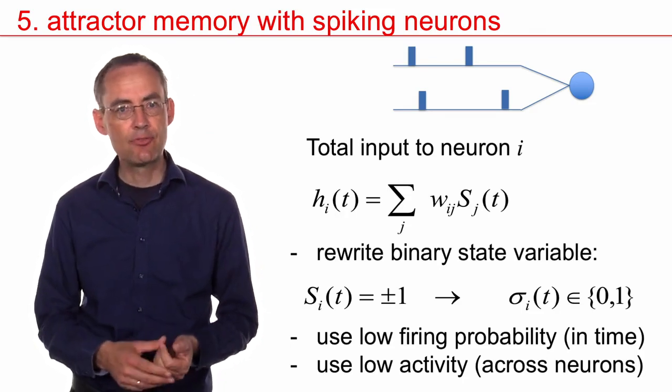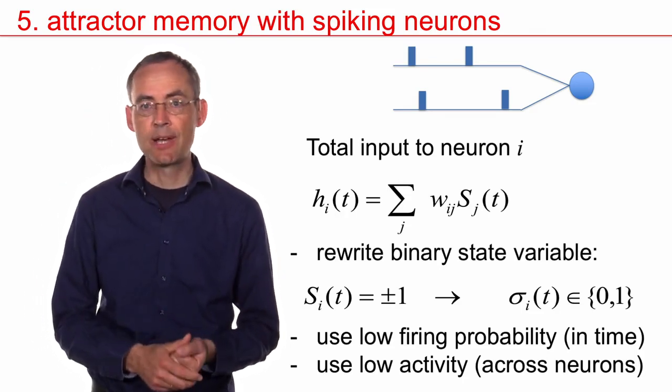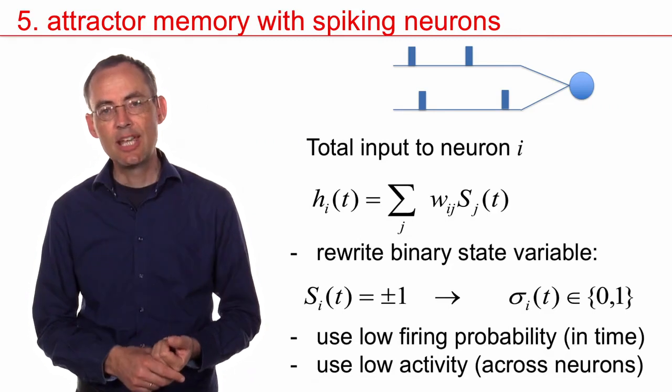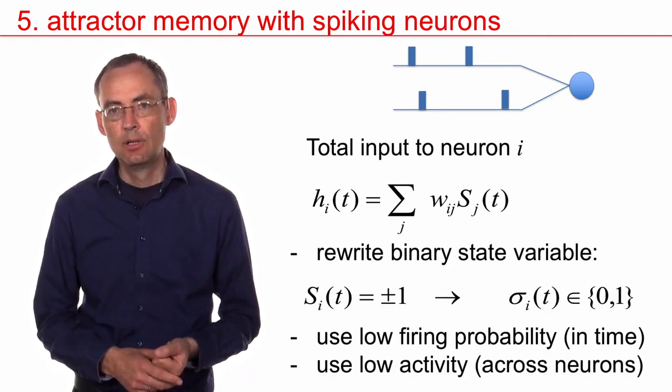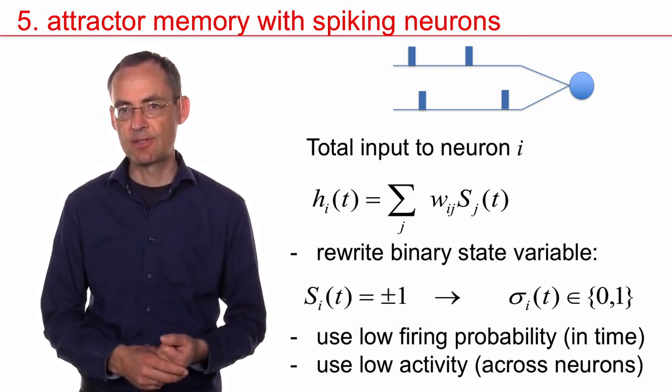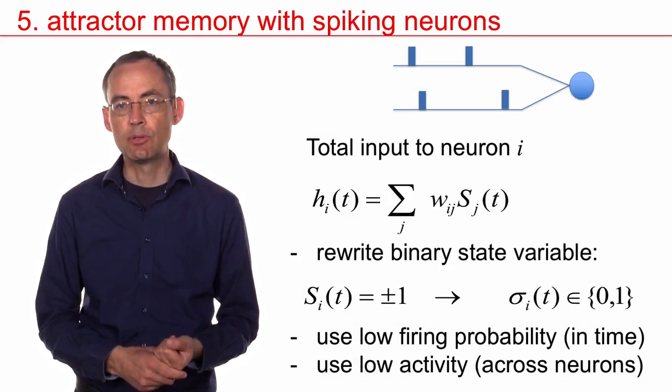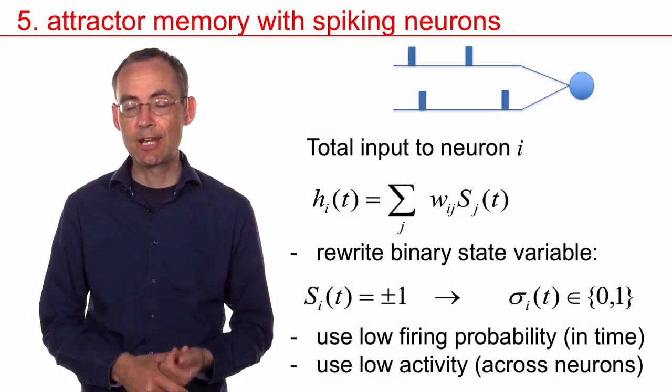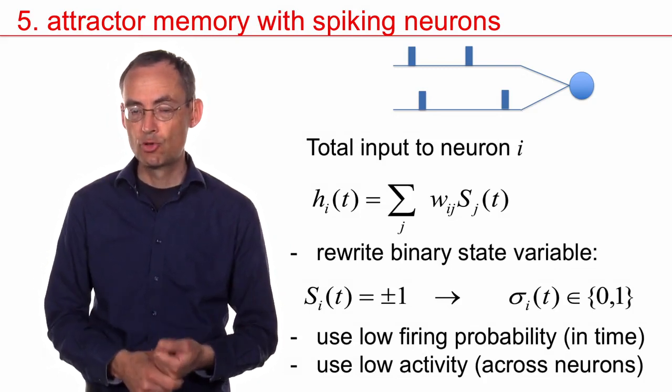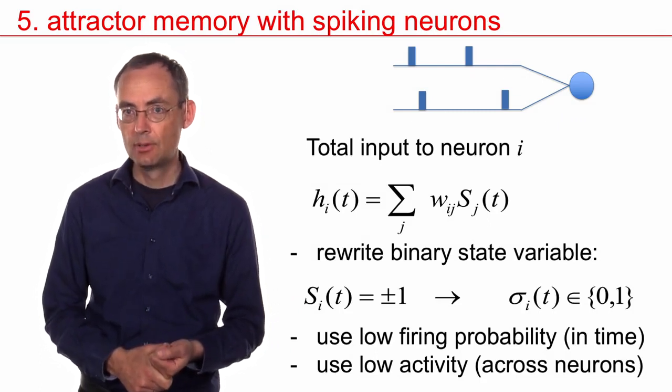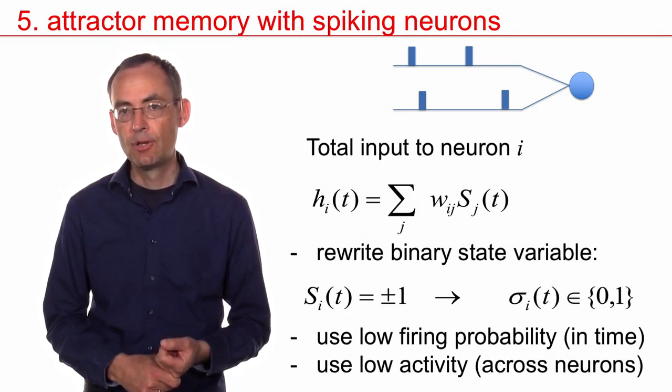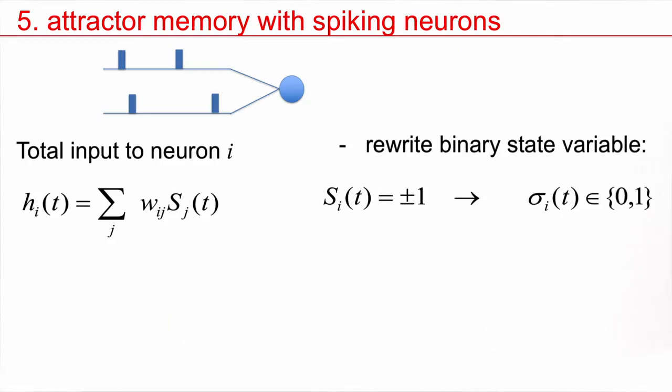In particular, we still have the problem that neurons are binary plus minus one. If you think of the input to neuron i, the total input, and if you take S_j as plus or minus one, then this is like you have positive pulses coming in and negative pulses coming in to a postsynaptic neuron. And that's not very realistic. Real neurons have binary variables: they have spikes, short pulses that are on or absent.